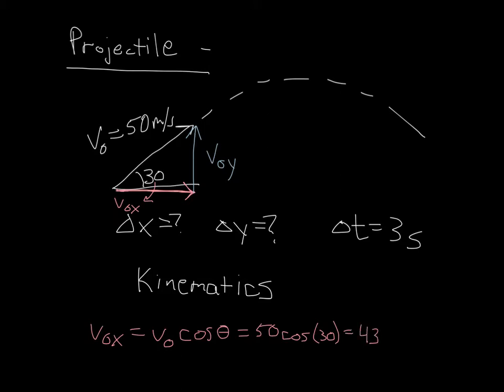I can follow the same procedure for v₀ᵧ. v₀ᵧ, since it's the opposite from my 30 degree angle, is going to involve the sine of the angle. So that's going to be v₀ times sine of my angle. That'll be my 50 times the sine of 30 to give me a v₀ᵧ that's equal to 25.